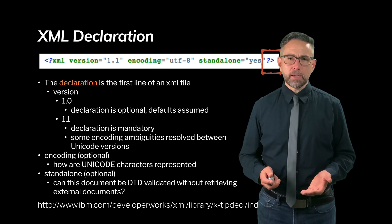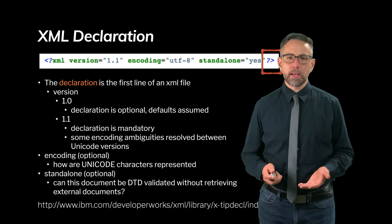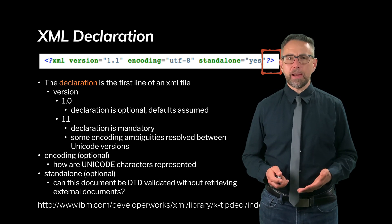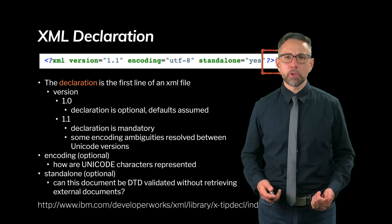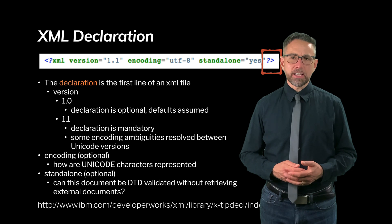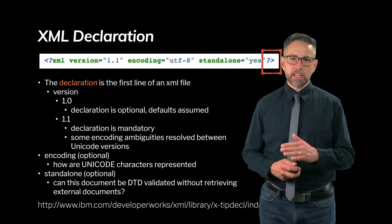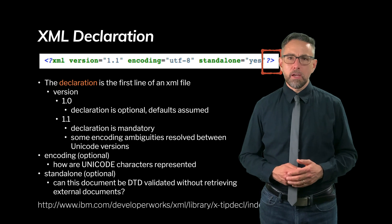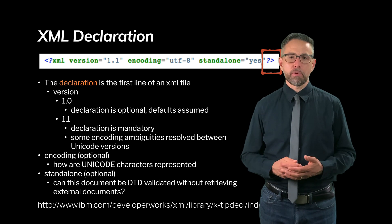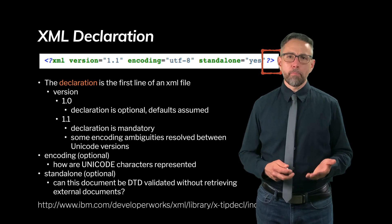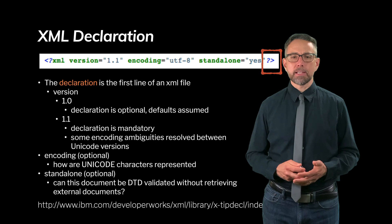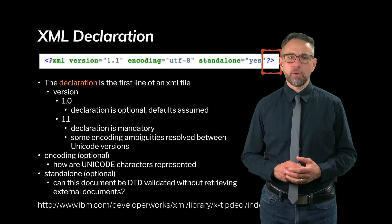There are two versions you can declare: version 1.0 or version 1.1, declaring how the text that follows will be interpreted. For version 1.0, the declaration is optional and all defaults are assumed. But for version 1.1 the declaration is mandatory — you must have it at the top of your file. The move from 1.0 to 1.1 was partly because there were encoding ambiguities resolved between multiple Unicode versions.